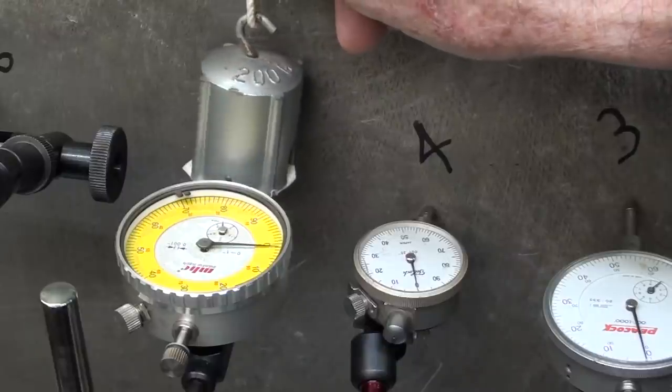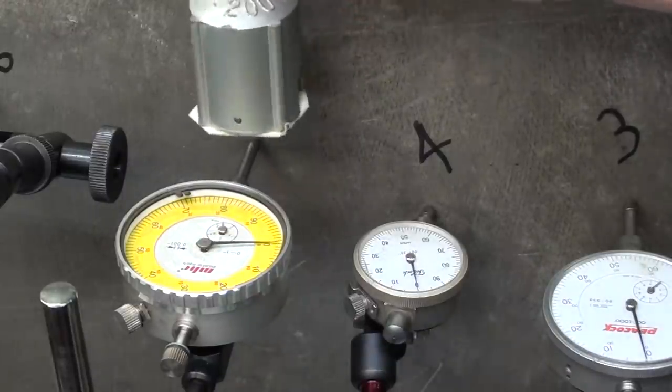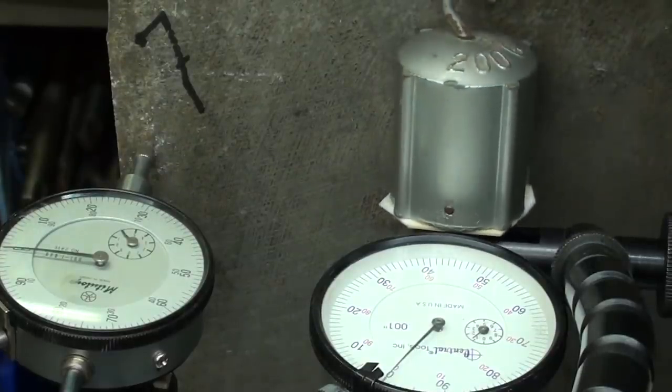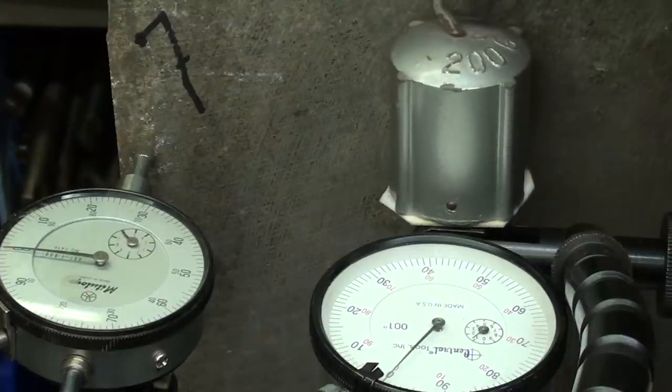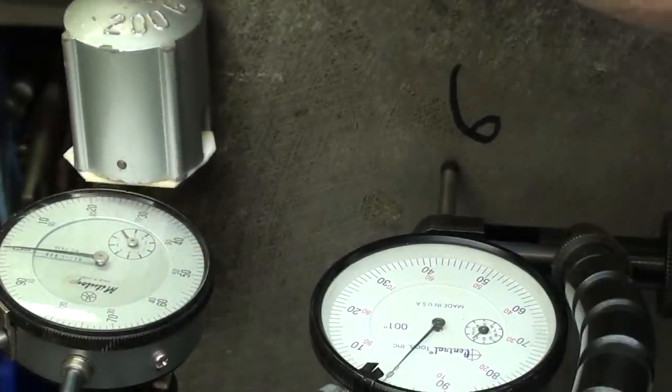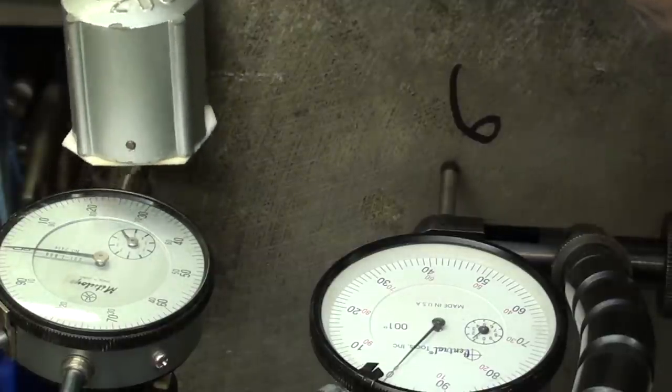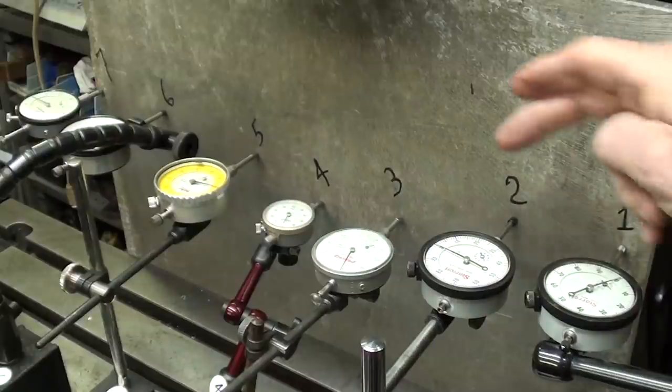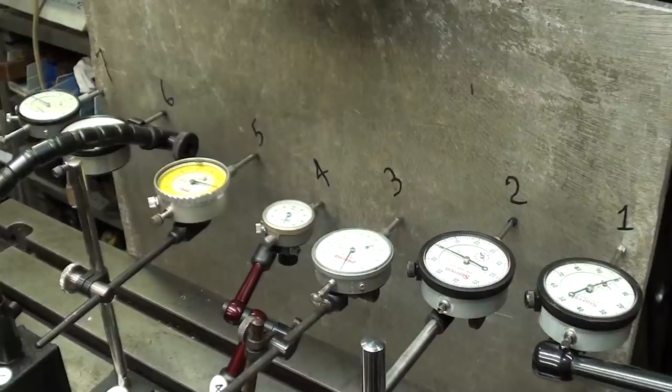Number five moved about two-thousandths. Number six, a couple-tenths of a thousandth possibly. And number seven, a tenth or two. I would call number three the only one that had any real appreciable amount of movement.